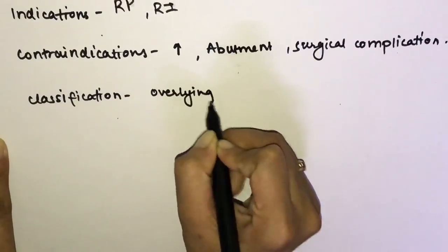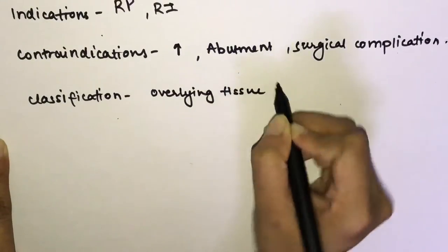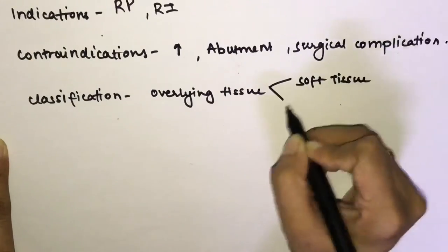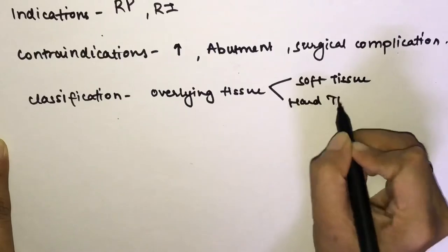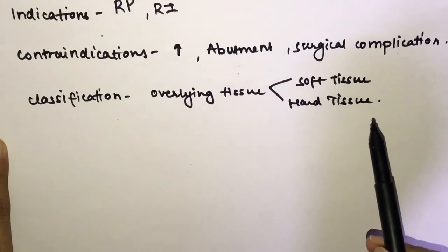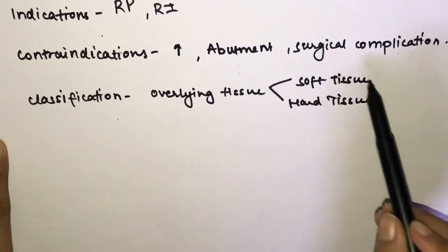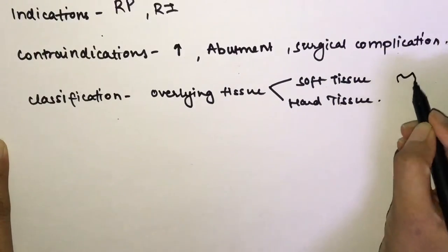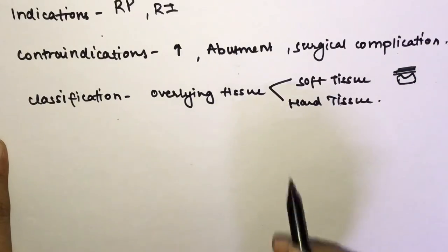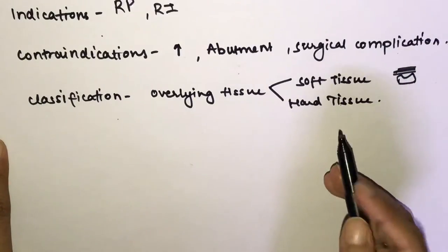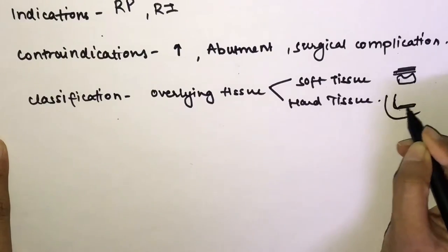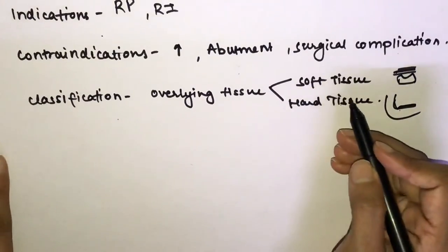Classifications of impacted third molars: depending on the overlying tissue, impaction can be soft tissue impaction — where dense fibrous tissue overlies the teeth — or hard tissue impaction, where obstruction by bone is present.